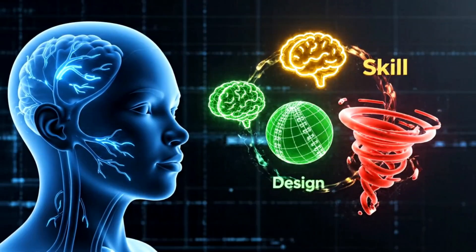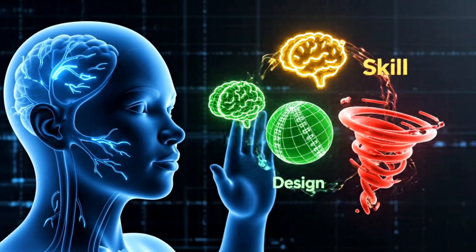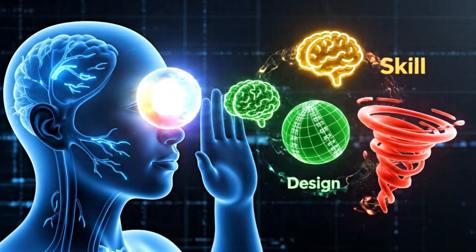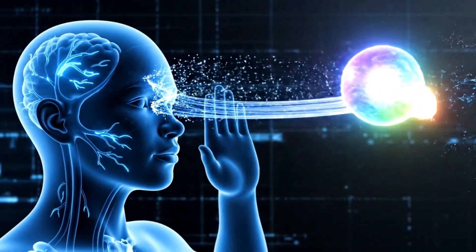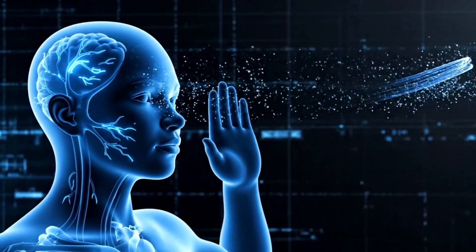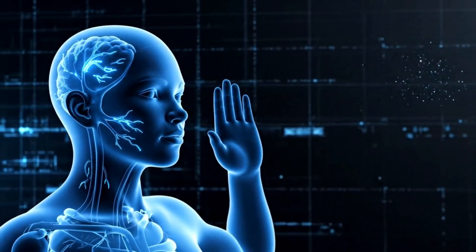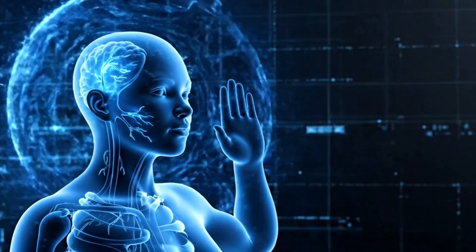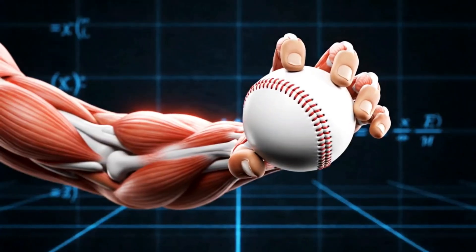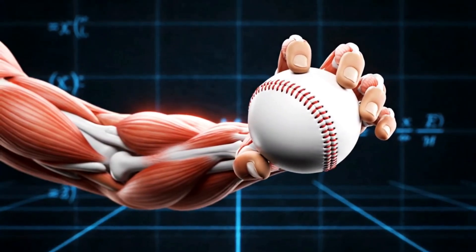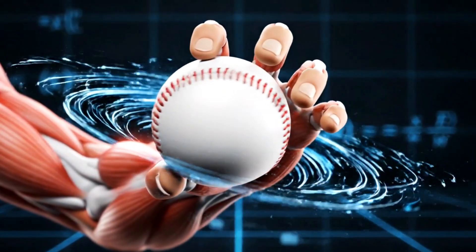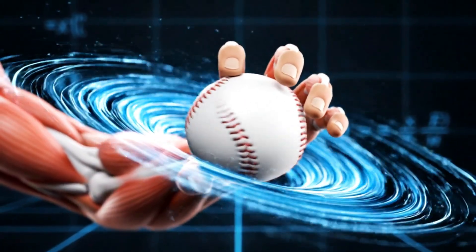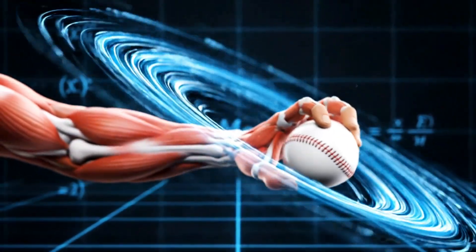The perfect curve is the convergence of the player's skill, the ball's design, and the laws of aerodynamics. The Magnus effect isn't just for soccer — it's the same physics that allows baseball pitchers to throw curveballs.